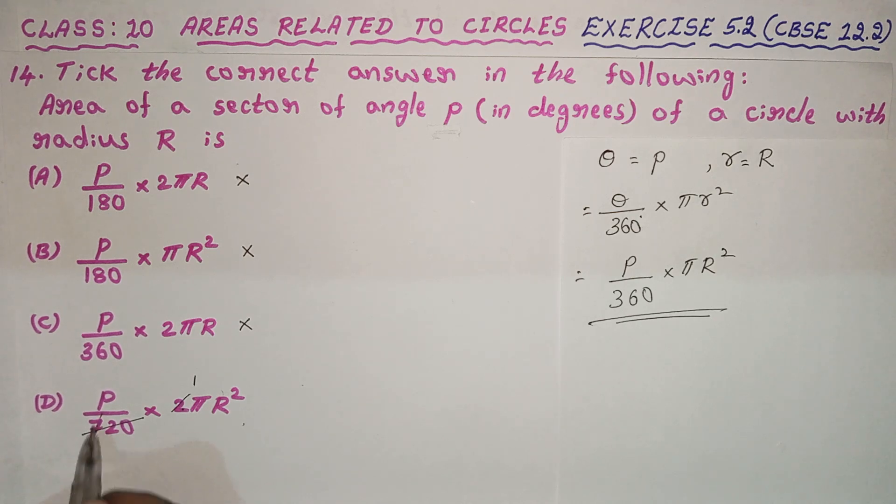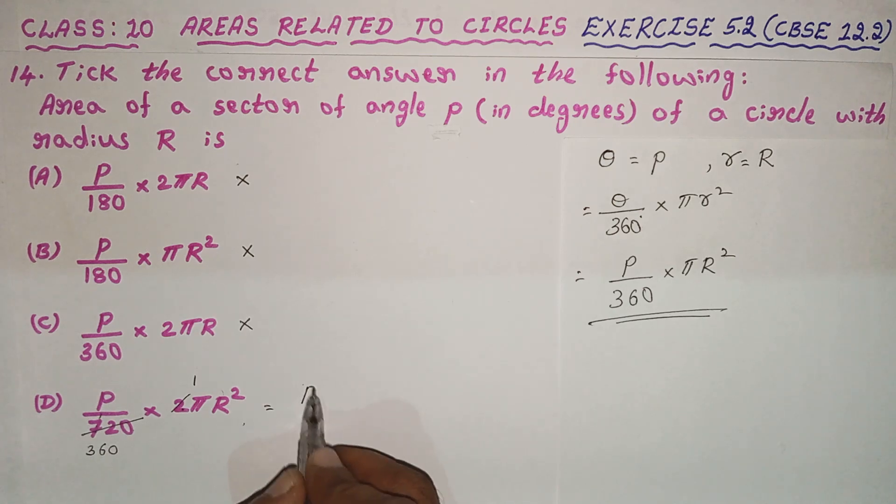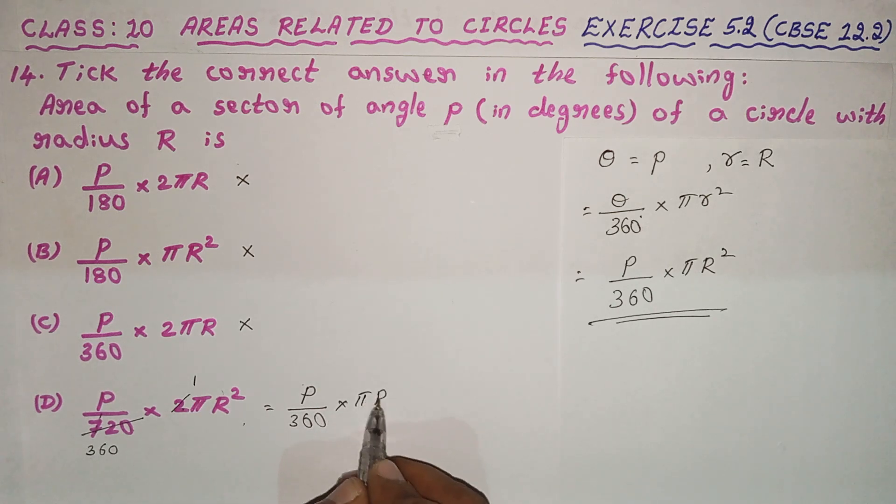This is the right answer. The correct formula is P divided by 360 into 2, which equals πR².